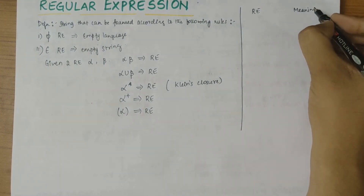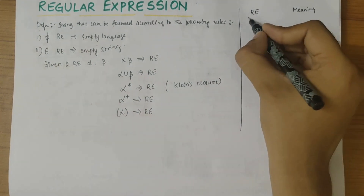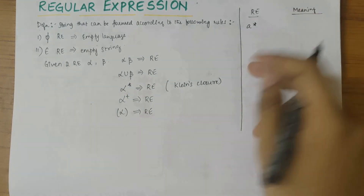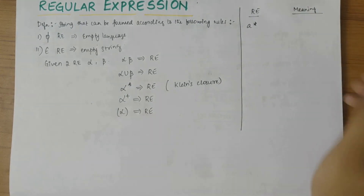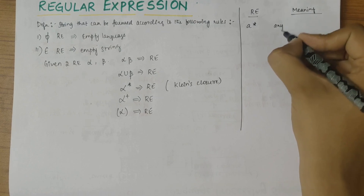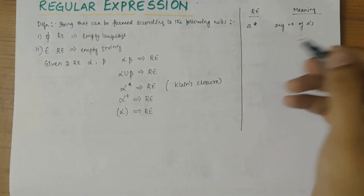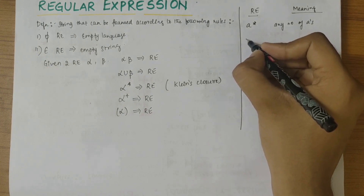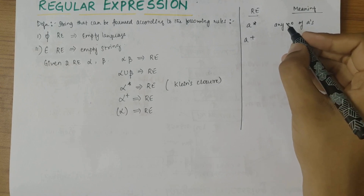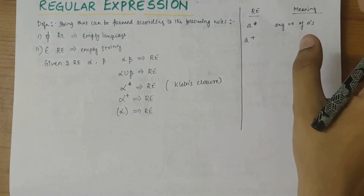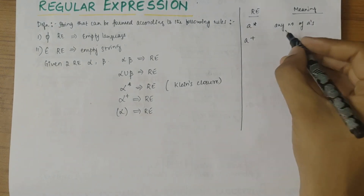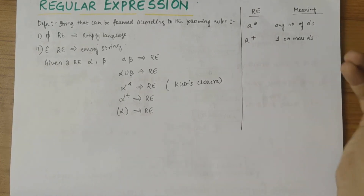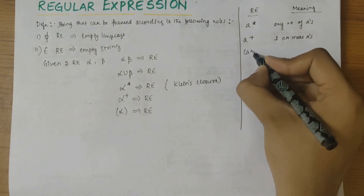This topic is incomplete if we don't discuss them. First, a-star refers to a string consisting of any number of a's. Then a-plus refers to a string consisting of one or more a's.